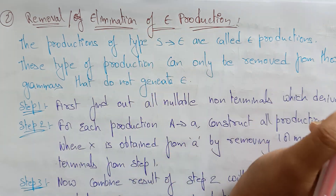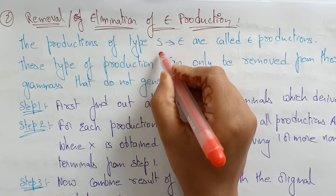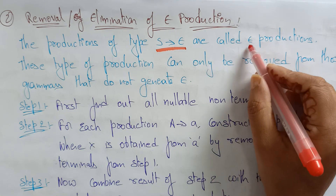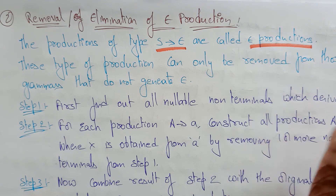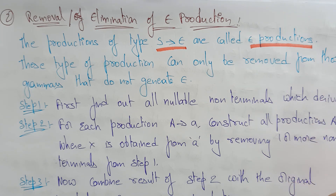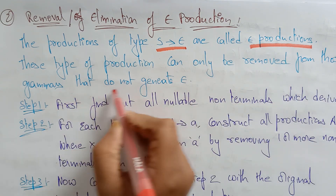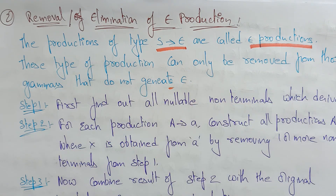Now let's see the second one: removal or elimination of epsilon productions. If the production determines epsilon, those are called epsilon productions — that is, empty productions. Not only the start symbol, but whatever non-terminals derive epsilon productions must be removed. These types of productions can only be removed from grammars that do not generate epsilon.